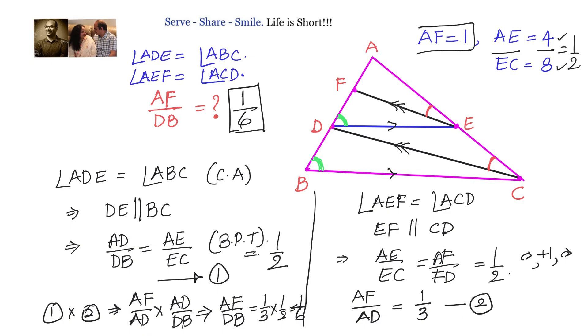Now given that AF equals 1, we can do this in another way also. AF equals 1, we know AF by DF is 1 by 2, so DF will become 2. Then AD became 3, and we know AD by DB is 1 by 2, that means DB will become 6. So AF by DB equals 1 by 6.